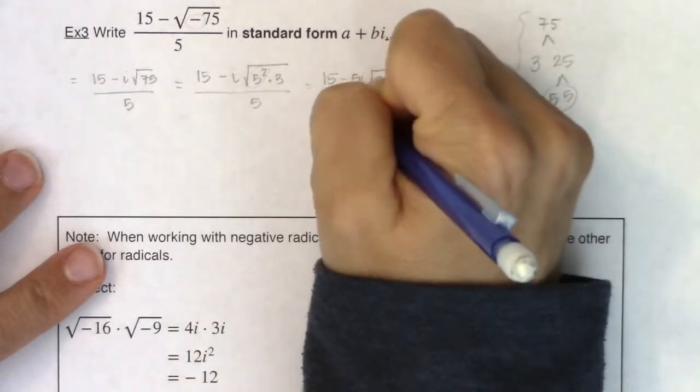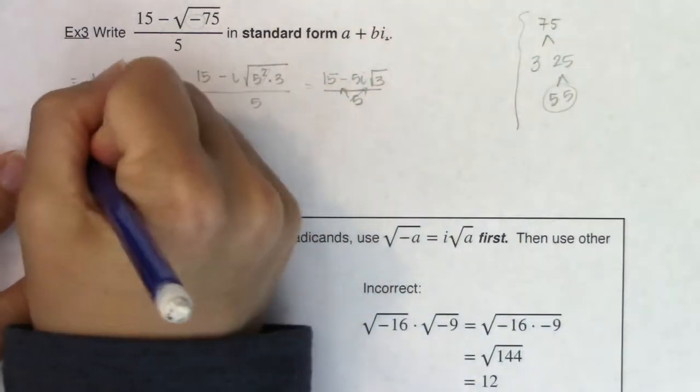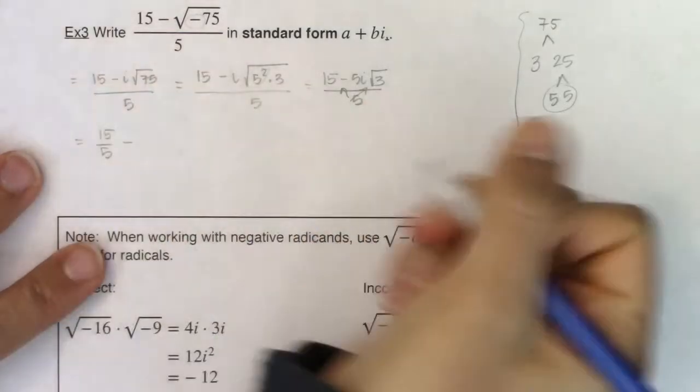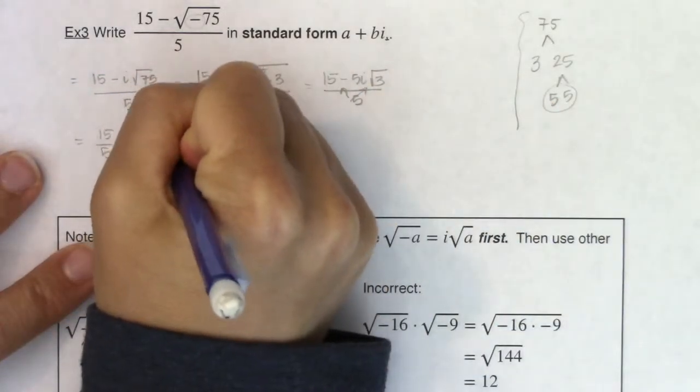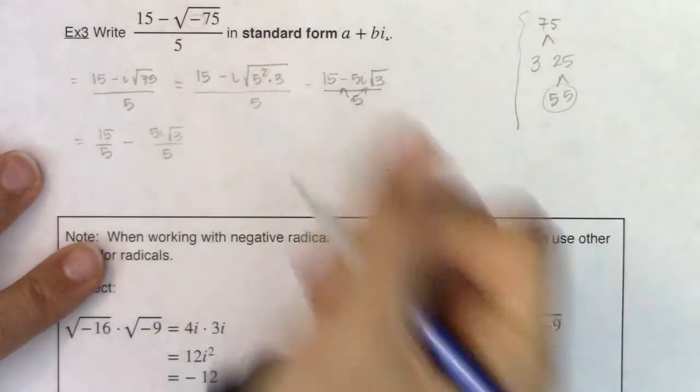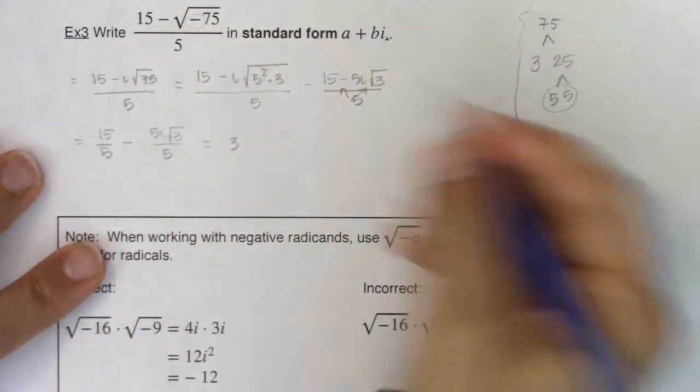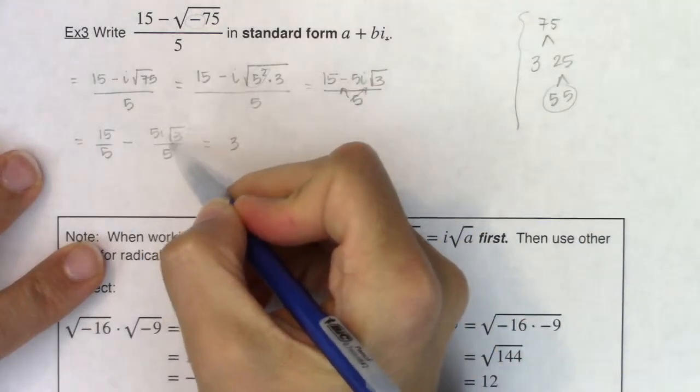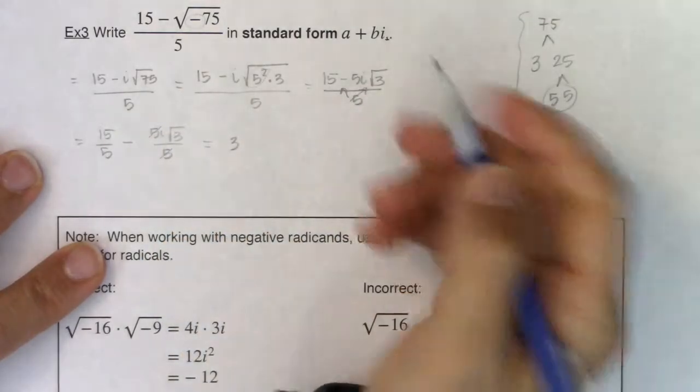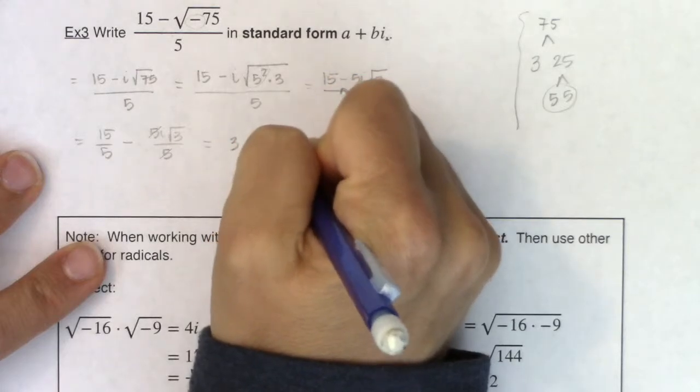So now it is time to do my little alien ears. So this will become 15 over 5 minus it looks like we have 5i root 3 over 5. 15 over 5 simplifies to 3. 5i root 3 over 5, the 5s are going to cancel out. So this will be minus i root 3.